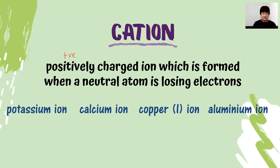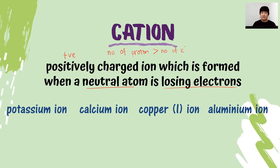Let's start with cation. We have learned that a cation is a positively charged ion, which is formed when a neutral atom loses its electrons. That is why in a cation, the number of protons is more than the number of electrons. I have a few examples of cations.